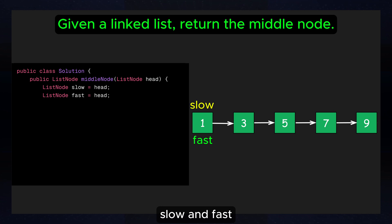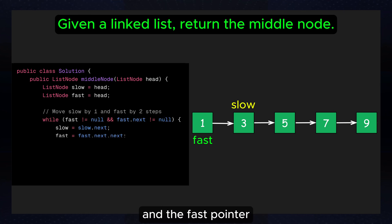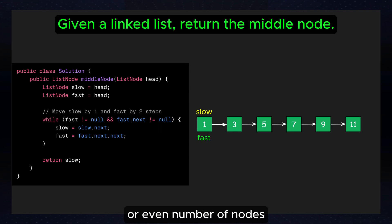Start with two pointers, slow and fast, both at the head of the linked list. Move the slow pointer one step at a time and the fast pointer two steps at a time. When the fast pointer reaches the end of the linked list, the slow pointer will be at the middle node. This method works whether the list has an odd or even number of nodes.